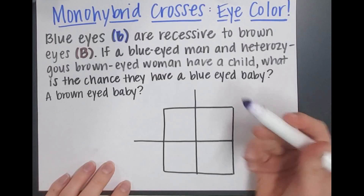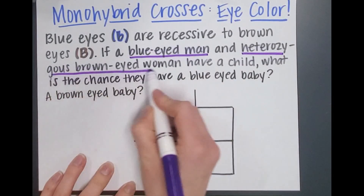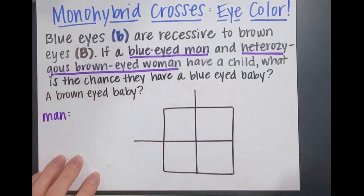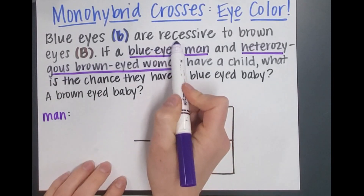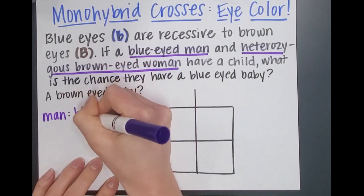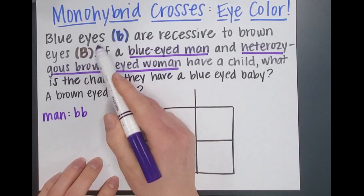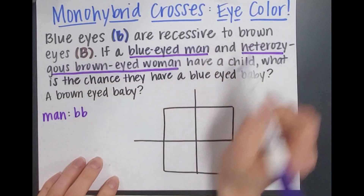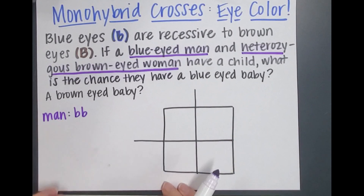The first thing we need to do is figure out what genotypes the man and the woman have. Our man — if he is blue-eyed and blue eyes are recessive — he has to have two of the recessive alleles, so he's going to be little b, little b. He can't have a big B because the big B would show through and he would have brown eyes. But we know he has blue eyes, so he has to be double recessive alleles, little b, little b.